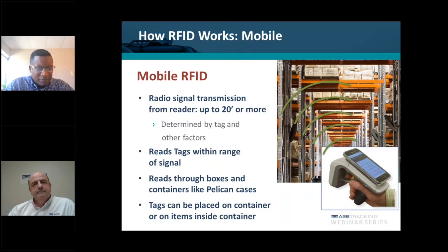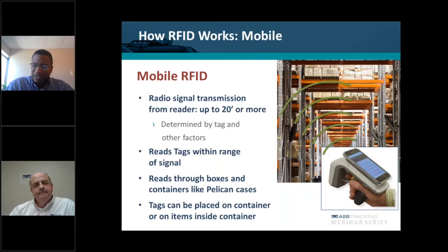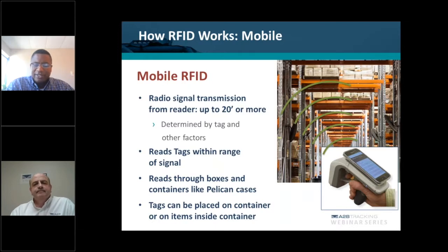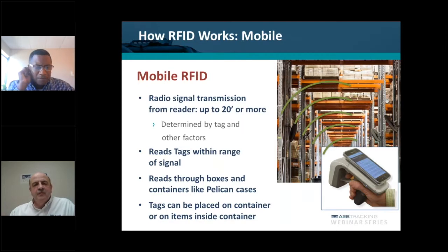In most asset tracking applications, the tag itself really serves as a license plate, and it identifies a particular asset in the back-end inventory system. You can perform an inventory, or if you're looking for something, you can find that asset in the back-end — it's linked through the EPC code in the RFID tag. This brings up an interesting point as we start talking about mobile RFID; on the next slide we'll talk about fixed readers.